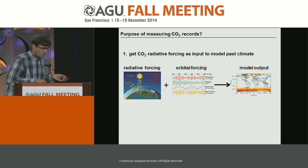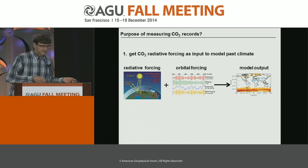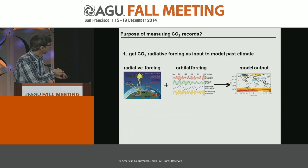So why do we actually measure CO2 on ice cores? What is the purpose? A very simple one is just to get CO2, because CO2 is a major greenhouse gas. Knowing CO2 in the past, you can run climate models and use the radiative forcing and the orbital forcing to get a model output — run climate models in the past.